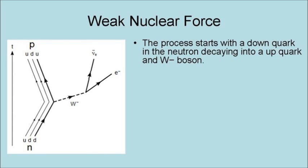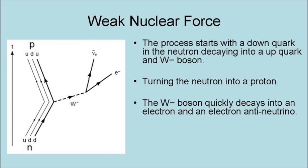The process starts with a down quark within the neutron decaying into an up quark and a W-boson, turning the neutron into a proton. The W-boson quickly decays into an electron and an electron-anti-neutrino.